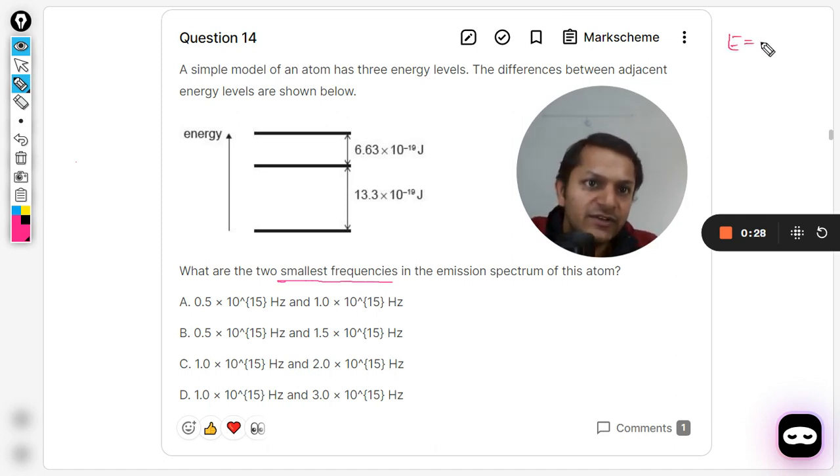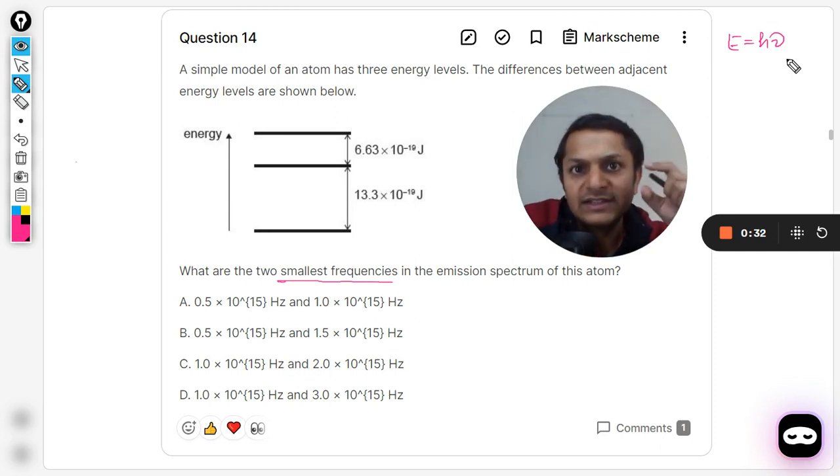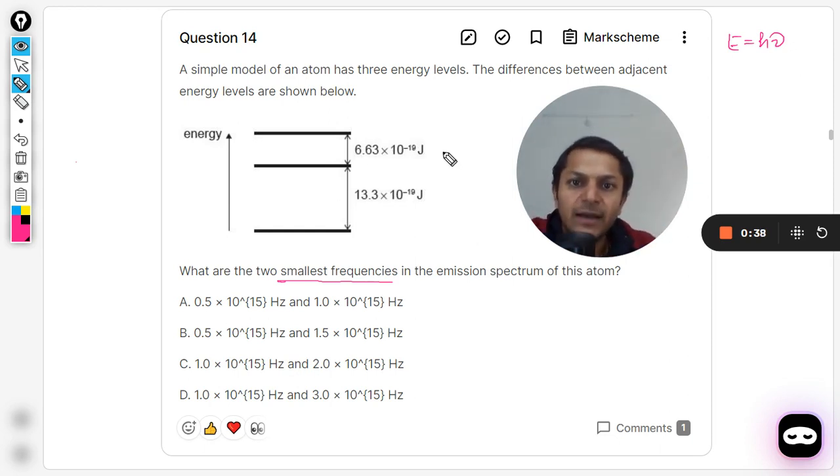Energy is given by hν, so smallest frequency means that you are concerned with the smallest energy. Smallest energy means smallest energy gap, so smallest energy gap can be found in this and this smallest frequency.